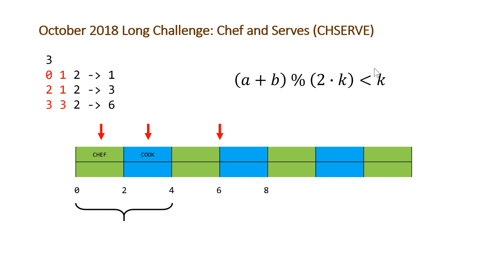So that gives us a formula: take (A + B) modulus (2 * K), then check whether the result is less than K. If it's less than K, it's Chef's turn to serve — it falls in the first half of the interval. If it's greater than or equal to K, it falls in the second half, meaning it's Cook's serve. That's basically all there is to this problem. Once you have this formula, you can just plug it into your solution and you're good to go.